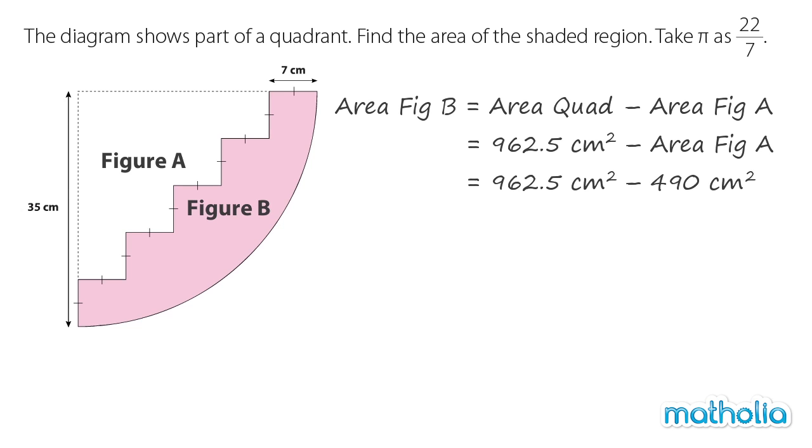So the area of figure B is equal to 962.5 square cm minus 490 square cm, which is 472.5 square cm.